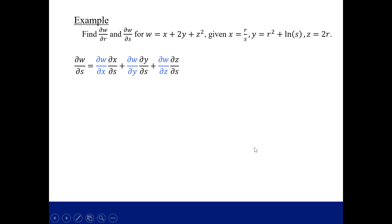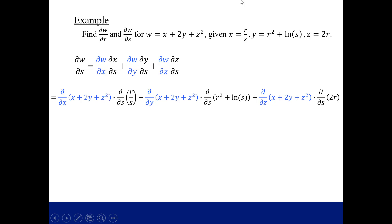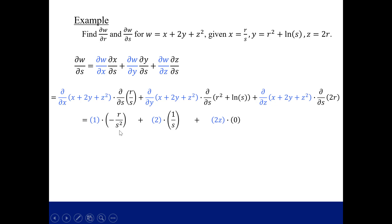Now we do the similar calculation for ∂w/∂s. The blue partial derivatives of w haven't changed, but the black partial derivatives now are with respect to s. The derivative of r/s with respect to s: treating r as a constant, s is s^(−1), so by the power rule we get −r/s². The derivative of r² ln s with respect to s: r is a constant, so this is r² · (1/s). The term 2r has no s factor, so its derivative with respect to s is 0. The result is −r/s² + 2s... wait, simplifying gives −r/s² + r²/s... the final result is −r/s² plus the r²/s term simplified appropriately.